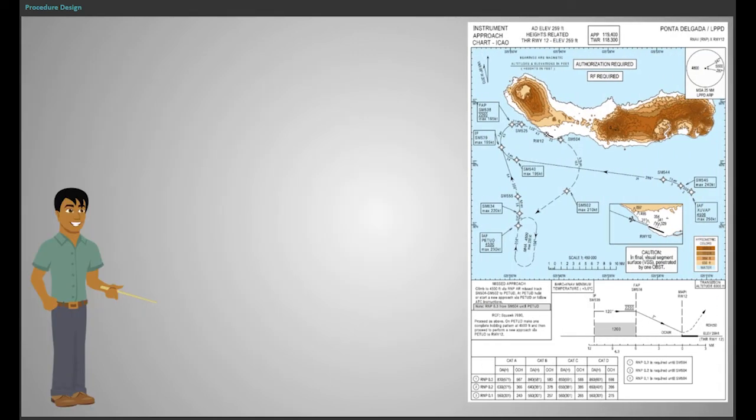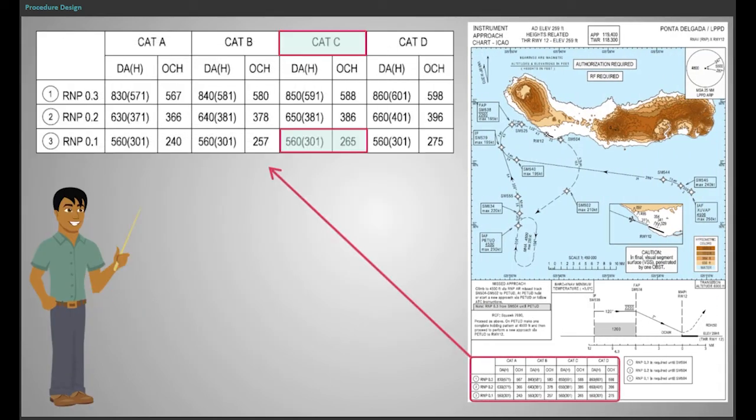Several approach minima are published depending on the aircraft category. The wingspan of the aircraft is considered in the calculation of the vertical error budget and therefore influences the approach minima.